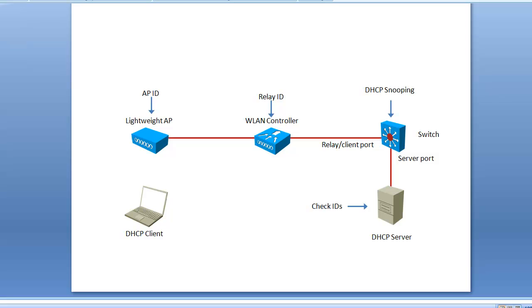When you use option 82 with a security angle, most of the time you also configure on a switch what we call DHCP snooping, which is basically the switch checking the relay ID and configuring ports so that you know which ports are supposed to be client or relay ports and which ports are supposed to be server ports. With DHCP snooping on the switch, you'll only be allowing the right packets on the right port.